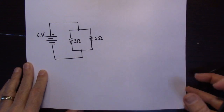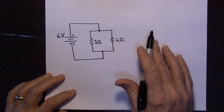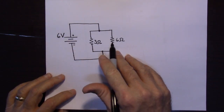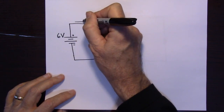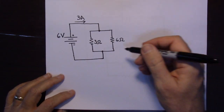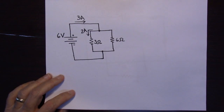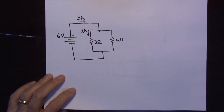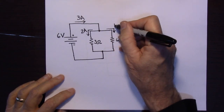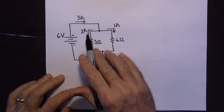Let's go back to this circuit. If I calculate the equivalent resistance and these combined give us about two ohms, there would be about three amps flowing through here. It comes down to the junction, and if two amps go this way, then it just makes sense that there's got to be some current going the other way — and that would have to be one amp. The current going in — three amps — equals the sum of the currents coming out: two amps plus one amp.